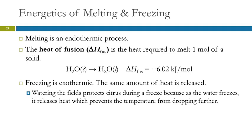Heat of fusion is the heat required to melt one mole of a solid. We can represent that as a chemical equation: one mole of water in the solid state going to one mole of water in the liquid state. The heat of fusion here is 6.02 kilojoules per mole. It's always a positive number. So melting is endothermic, which means that freezing is exothermic. If you freeze a mole of water, you have to remove 6.02 kilojoules of energy per mole.